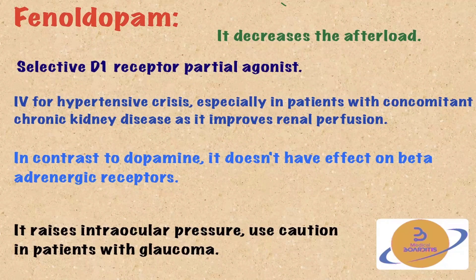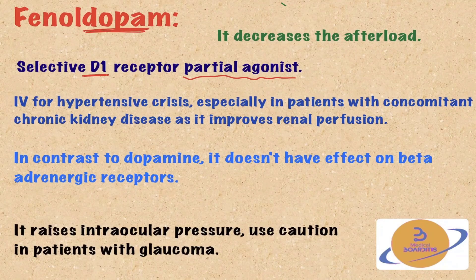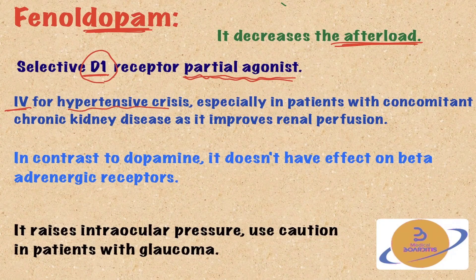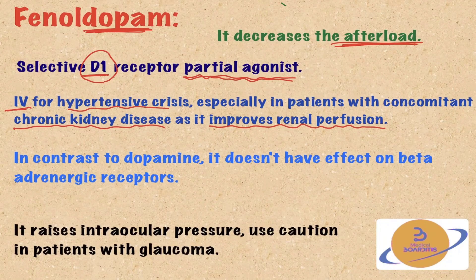Phenoldopam is a selective D1, or dopamine 1, receptor partial agonist. You can remember that the name phenoldopam contains 'DOPA,' which reminds you that it works on dopamine receptor D1. Phenoldopam decreases the afterload or blood pressure, and is used intravenously for hypertensive crisis, most especially in patients with concomitant chronic kidney disease, as it improves renal perfusion. This is a unique function of phenoldopam, making it the drug of choice for hypertensive crisis with concomitant chronic kidney disease.